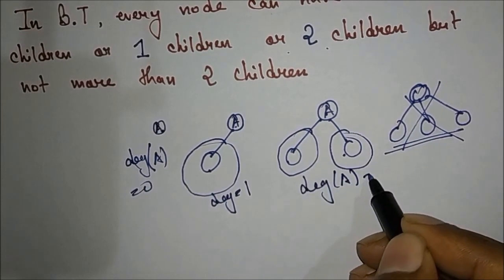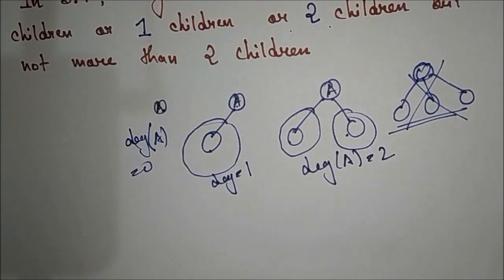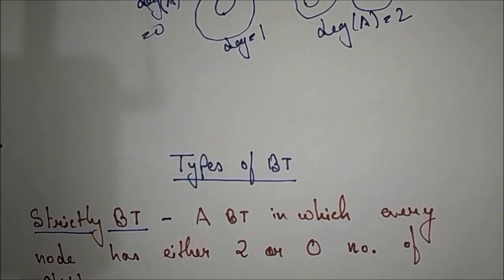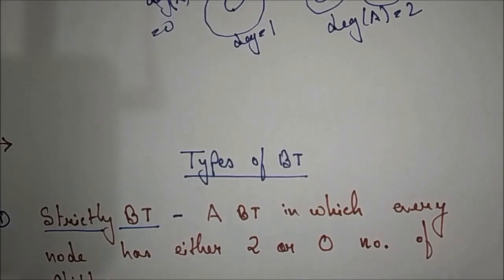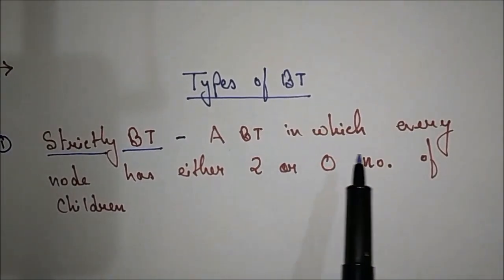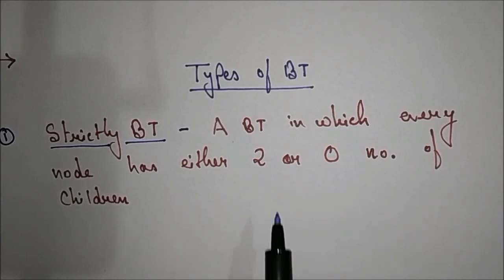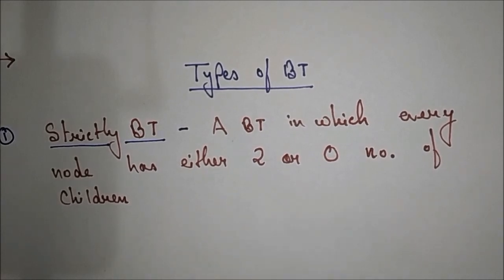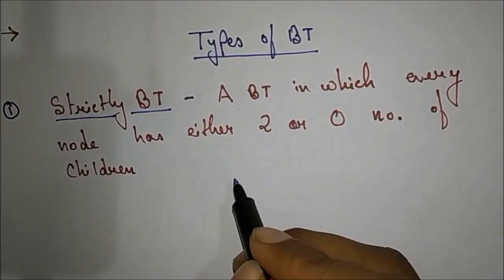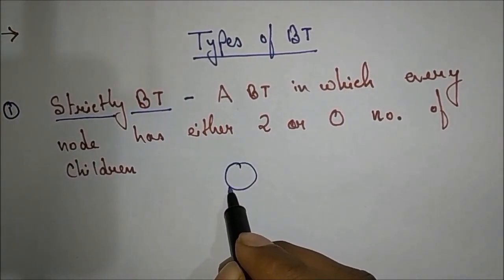Now we'll move to the types of binary tree. The first is the strictly binary tree — a binary tree in which every node has either two or zero children. The condition is it should have two or zero. We will understand it clearly by this example.